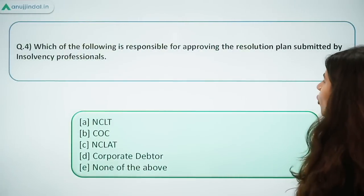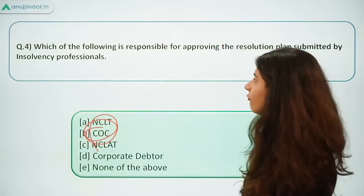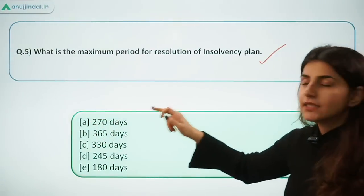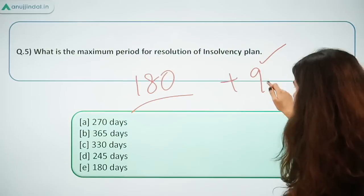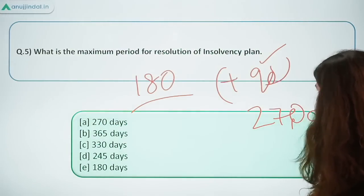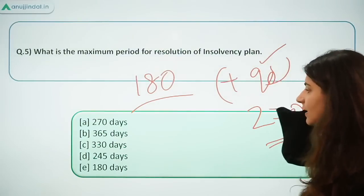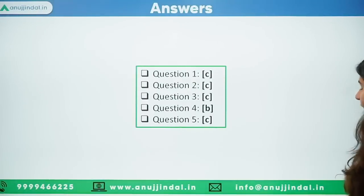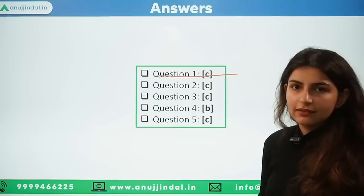Which body is responsible for approving the resolution plan submitted by an Insolvency Professional? That is the CoC — Committee of Creditors. What is the maximum period for resolution of an insolvency plan? Earlier when IBC was formed, the maximum period was 180 days, which could be further extended to 270 days. The total maximum period for the insolvency resolution process is 330 days. That brings us to the end of today's session. Thank you for watching.